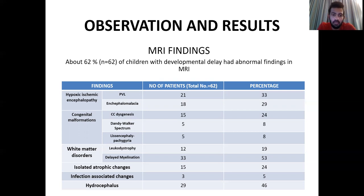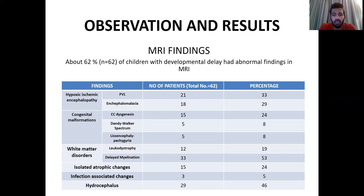In congenital malformations, corpus callosal dysgenesis was seen in 24 percent. Dandy-Walker spectrum was shown in 8 percent and lissencephaly and pachygyria spectrum was shown in 8 percent. Amongst white matter disorders, leukodystrophy was seen in 19 percent and delayed myelination in 53 percent. Isolated atrophic changes were seen in 24 percent, infection-associated changes in 5 percent, and hydrocephalus in 46 percent. There is also overlap of MRI findings seen across these categories.